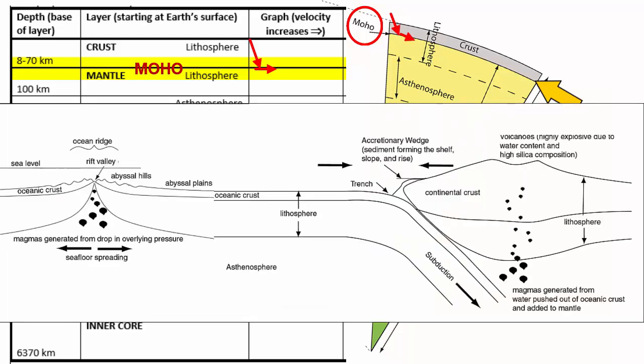Because of isostasy, the base of the crust is deeper under continental crust, especially mountains, and closer to the surface under oceanic crust, especially the thinnest crust at seafloor spreading centers. Mohorovicic is the name of the scientist who first discovered this boundary using seismic waves, and hence this boundary between the crust and the mantle is called the moho.